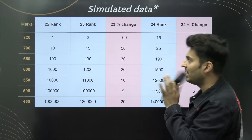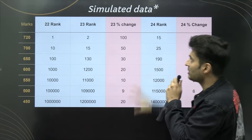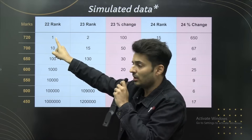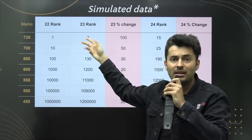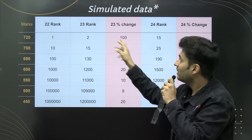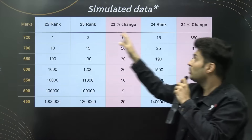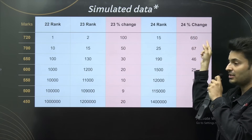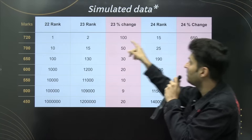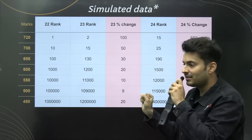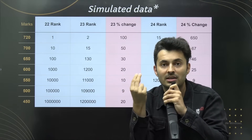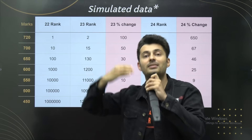I will show you with sample data — this is not the real data, this is simulated data just to make you understand. Say last year, 2022 to 2023, 720 marks was scored by one student. Now there are two students at that score in 2023, so you can see there is a 100% jump. But if this year those two students become 15 students, it shows a 650% change. If anybody looks at this, they will be shocked. You know why that is? Because when you go to really high marks, there are very few students, so even a small change affects the percentage massively.